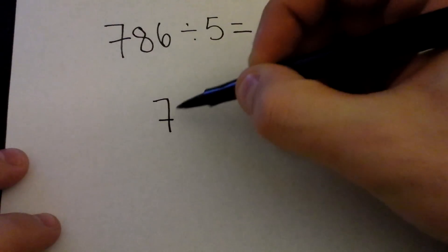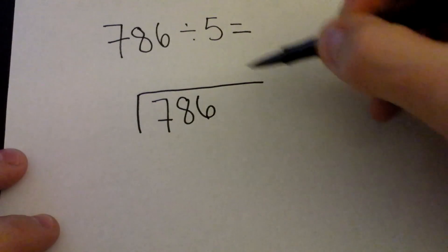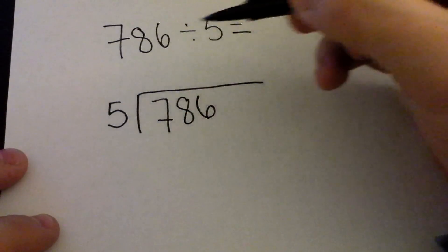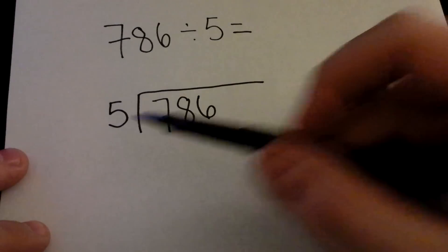Here's how we set up the problem. We're going to go ahead and write 786. We're going to say that we're going to divide it by 5. We have our dividend and our divisor.